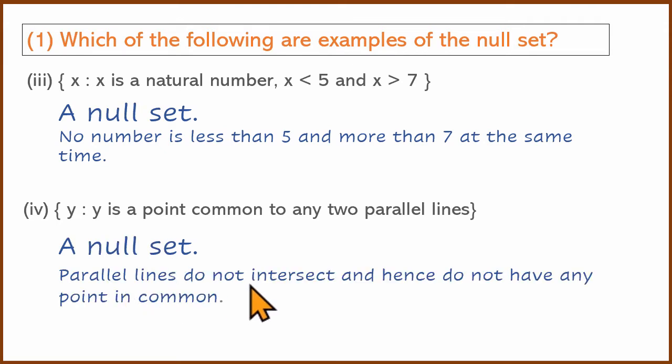Parallel lines do not intersect — that's the key point. There is no common point. This confirms it is a null set.